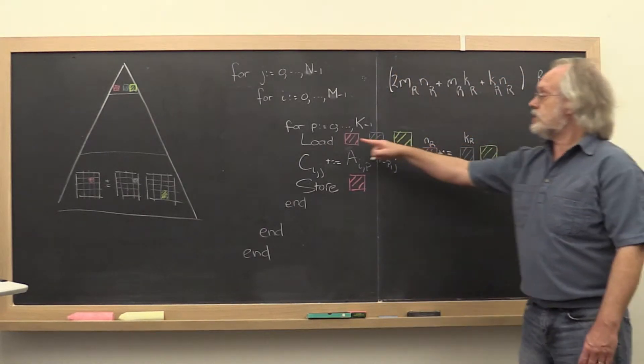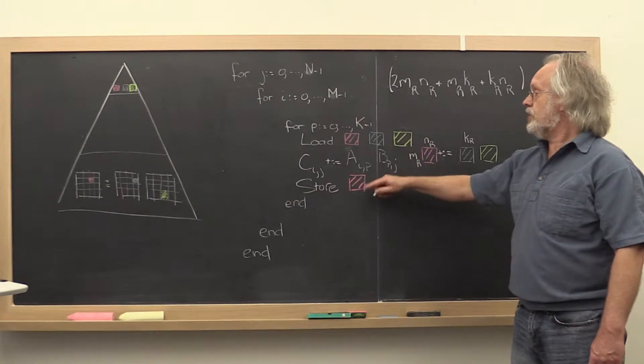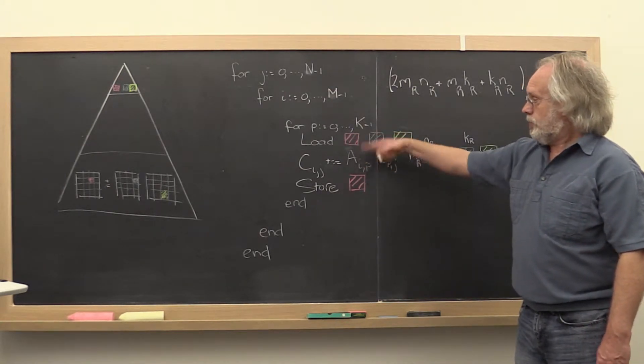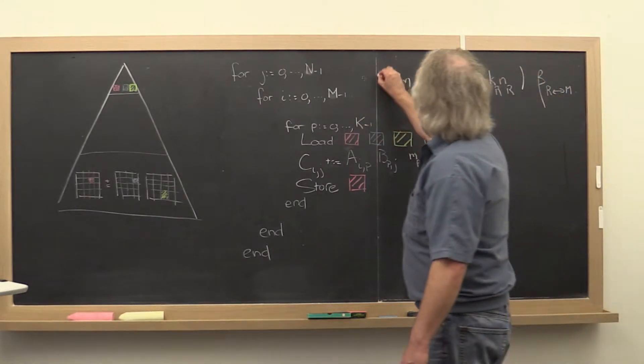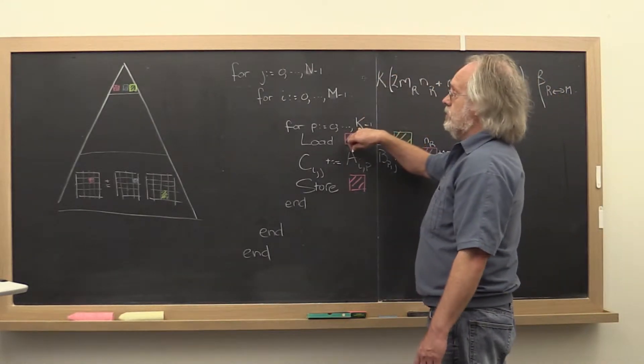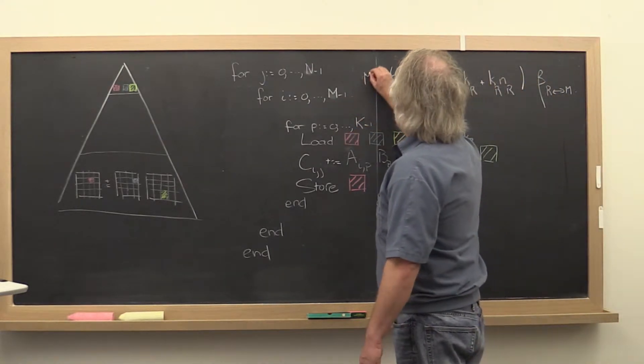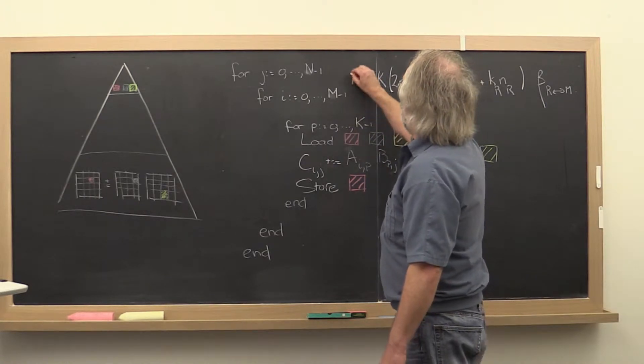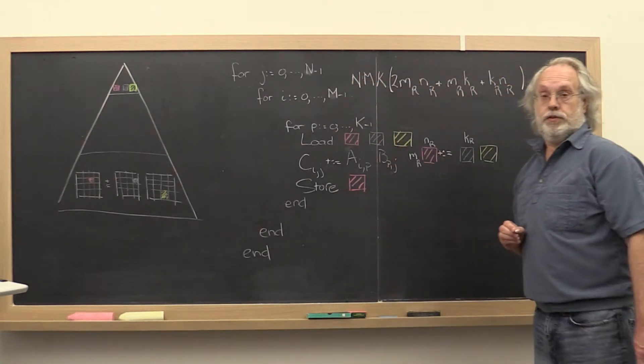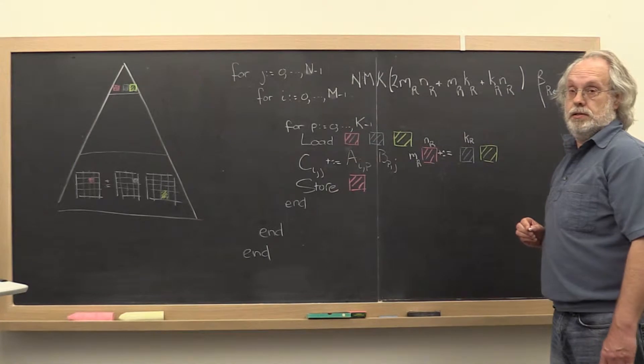But that's just the cost for loading and storing in the innermost loop. We need to do that k times for this loop and then m times for this loop and n times for that loop.